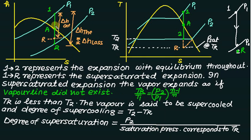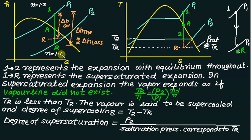For the expansion from 1 to A in the superheat region, the value of N is 1.3. For the expansion from A to 2 in the wet region, the value of N is given by 1.035 plus 0.1 times X, but this is treated as N equals 1.135. So this is a brief overview of supersaturation flow, and in the next video we will take some problems based on supersaturation.